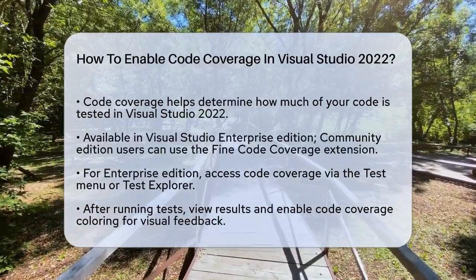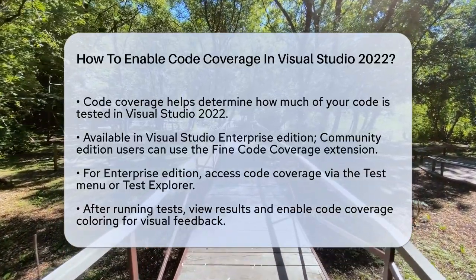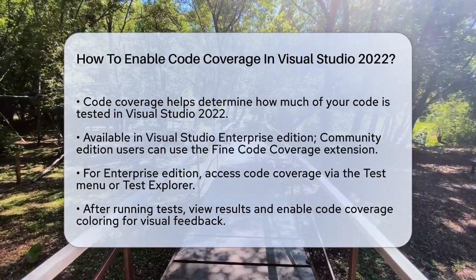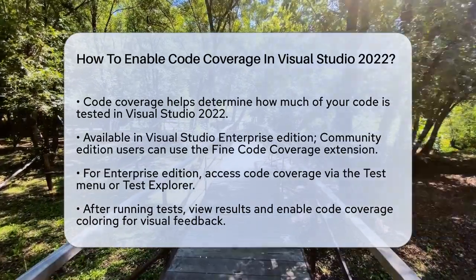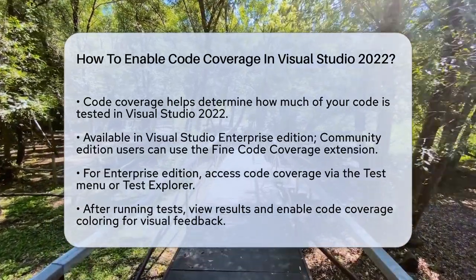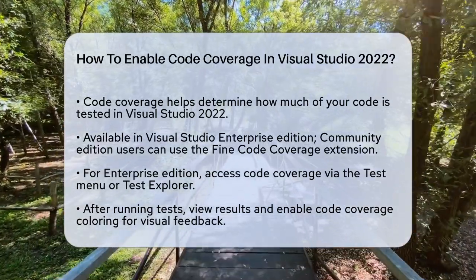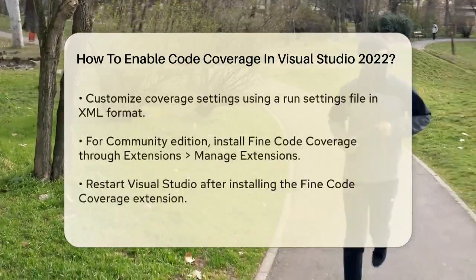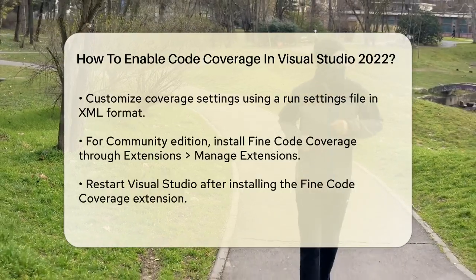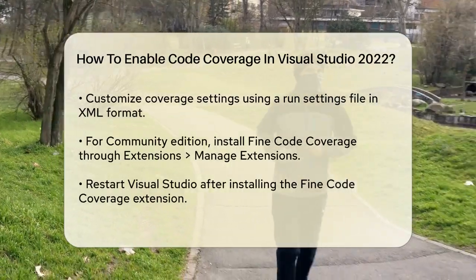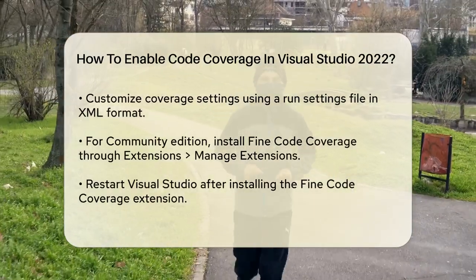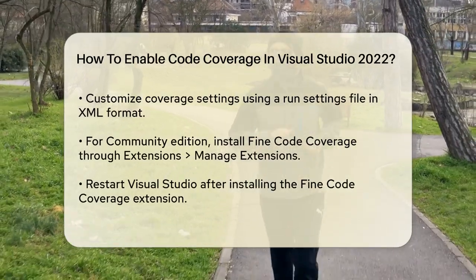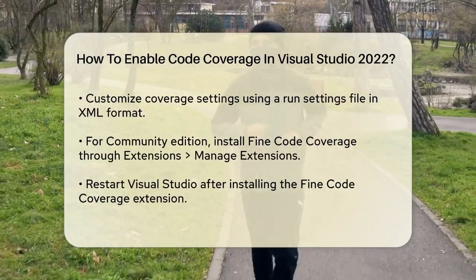Using Visual Studio Enterprise Edition: if you have the Enterprise Edition, here's what you need to do. Open Visual Studio and go to the Test menu. Select Analyze Code Coverage for all tests. You can also run code coverage from the Test Explorer tool window. After the tests have run, you'll see the code coverage results. To visualize which lines have been executed, choose Show Code Coverage Coloring in the Code Coverage Results window.